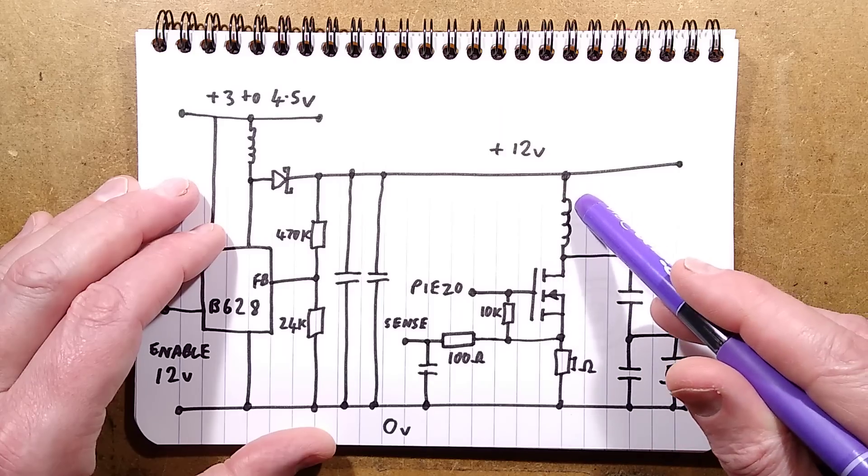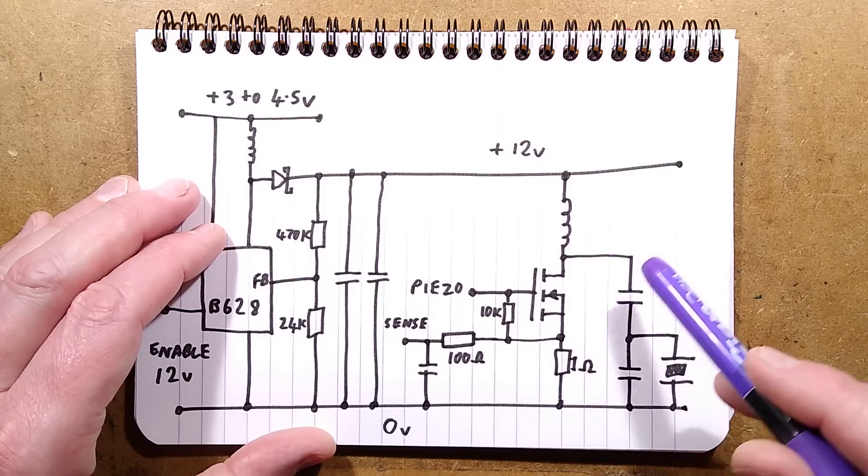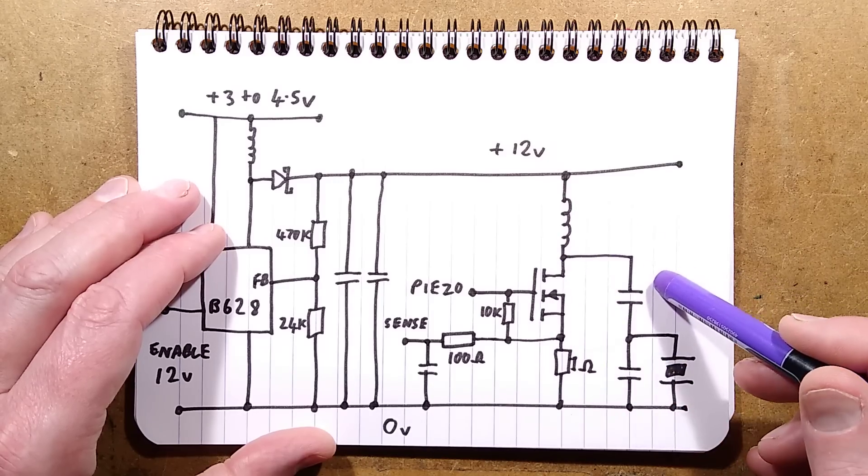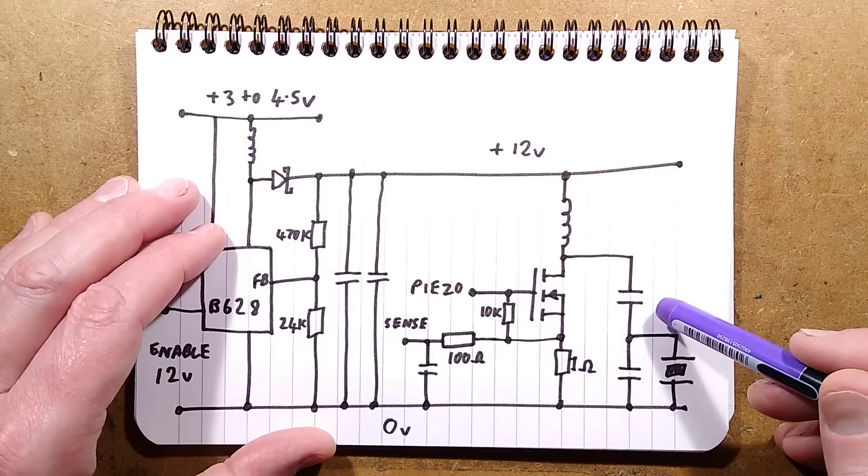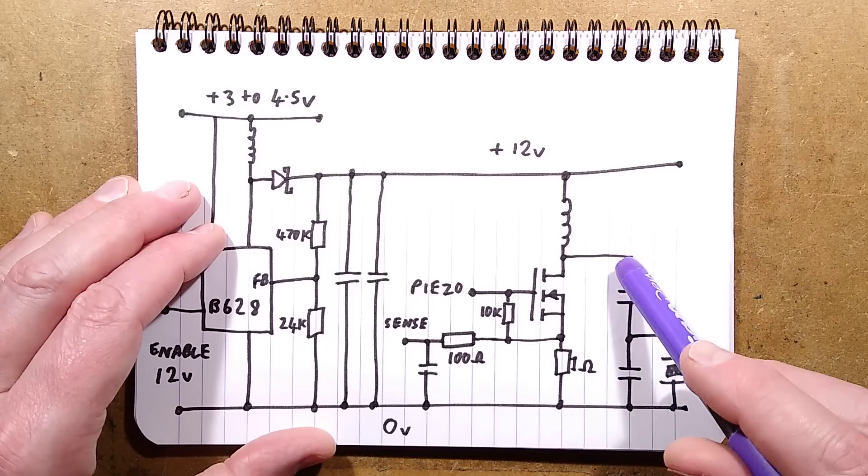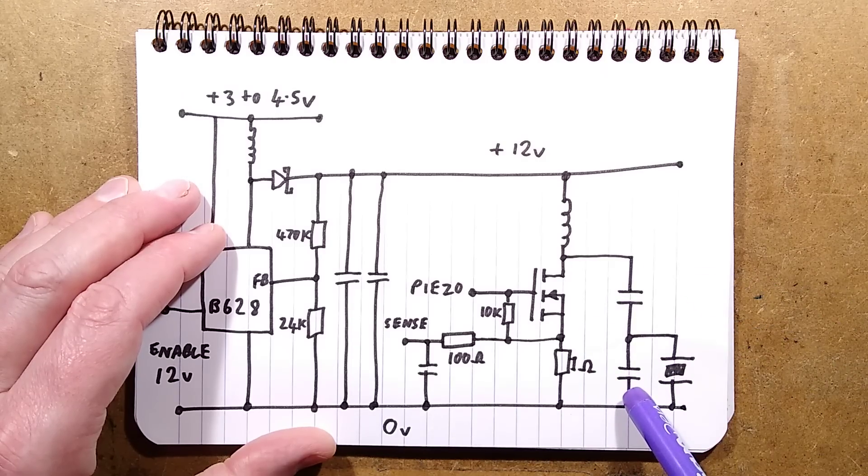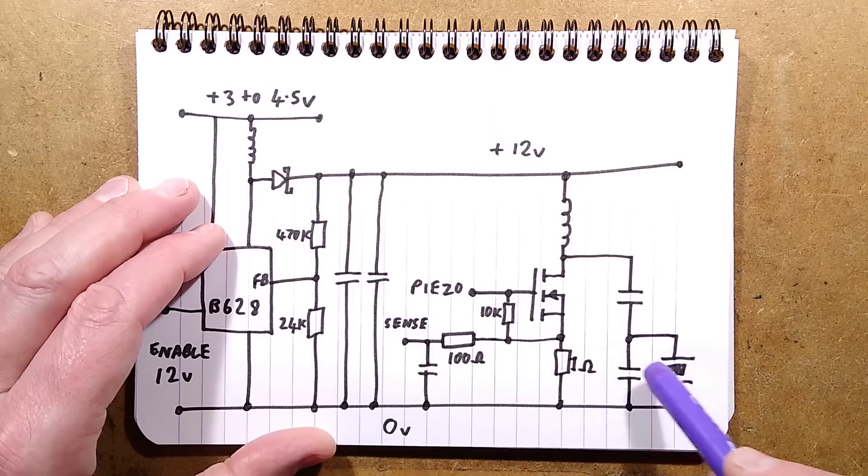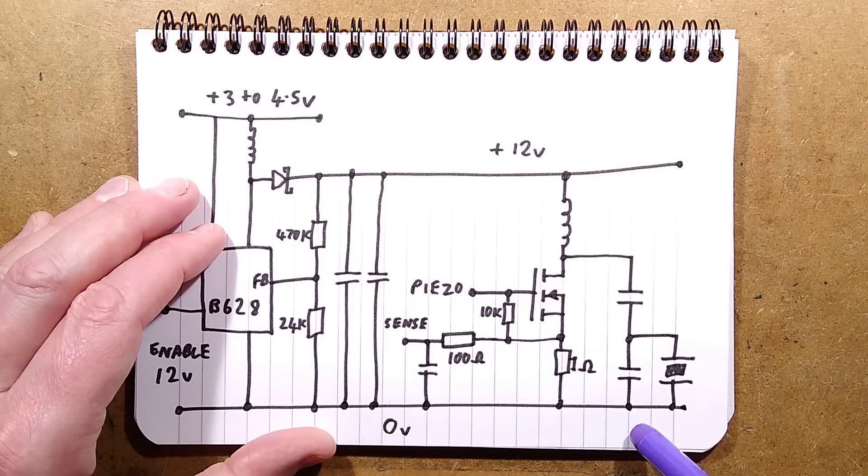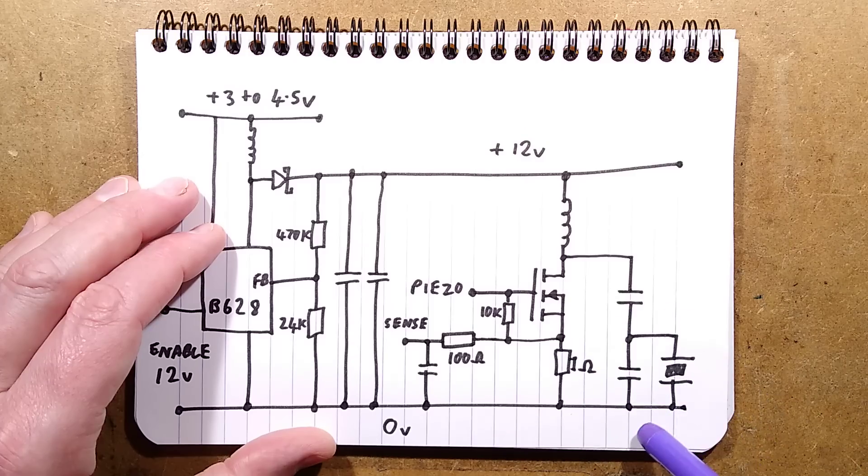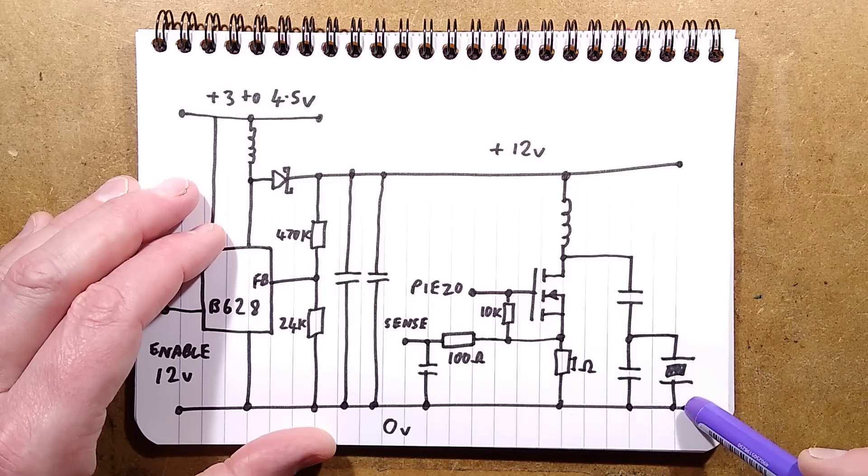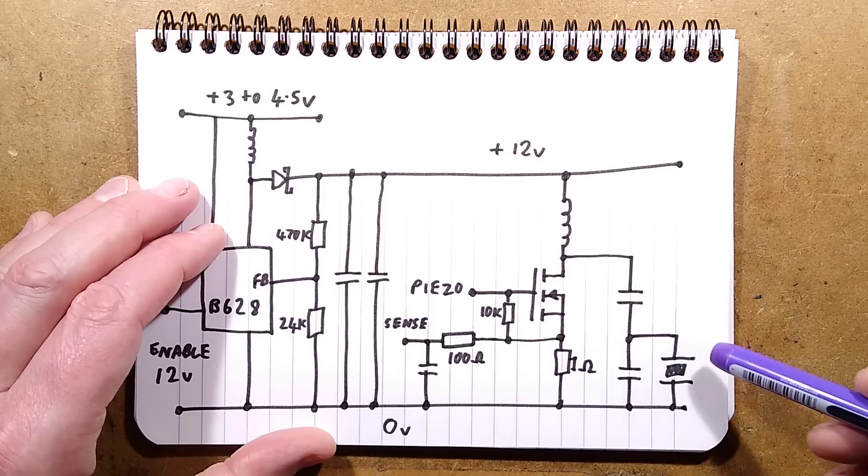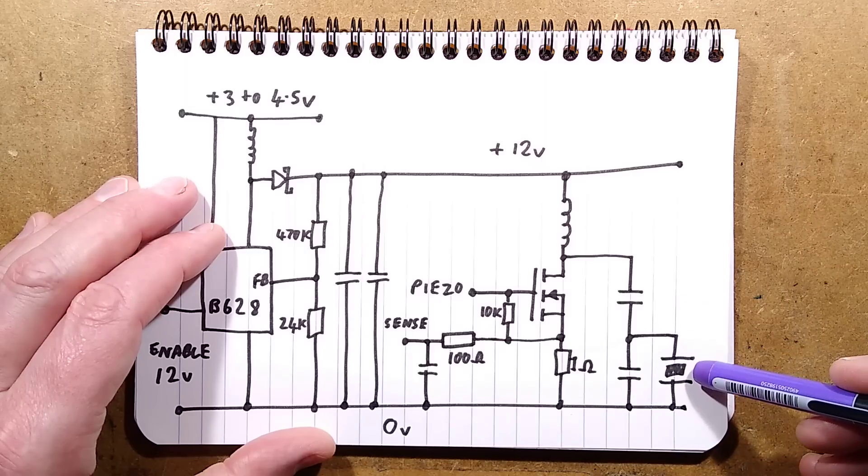And then, as the magnetic field collapses, it will potentially put out quite a high voltage. This is an odd arrangement here. They have two capacitors in series, couldn't measure them because they were in the circuit effectively, and the piezoelectric crystal across that. I'm not quite sure what they're actually doing here. But the circuitry is such that it's actually driving it quite powerfully.